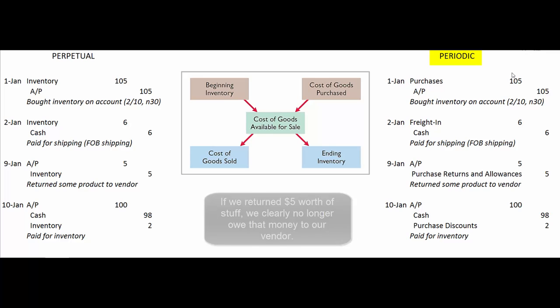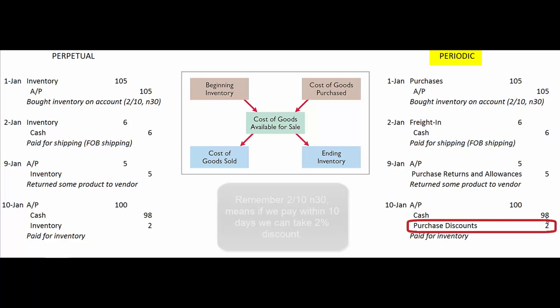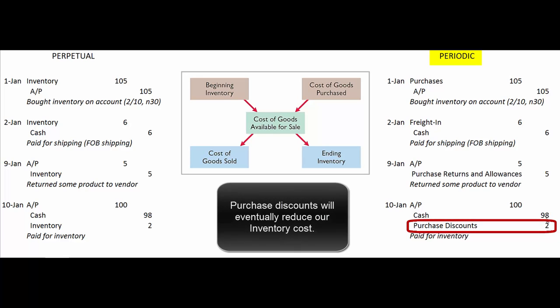Finally, we pay the bill within 10 days, so we take that accounts payable off our books. Since we paid it so quickly, we take a 2% discount, so we only write a check for $98. And in the periodic system, instead of reducing our inventory costs directly, we credit an account called purchase discounts.